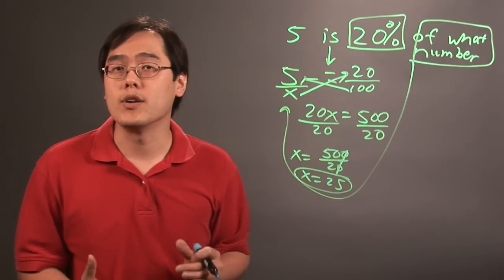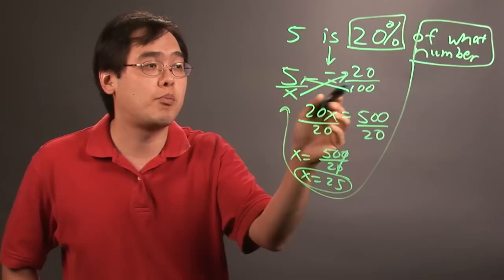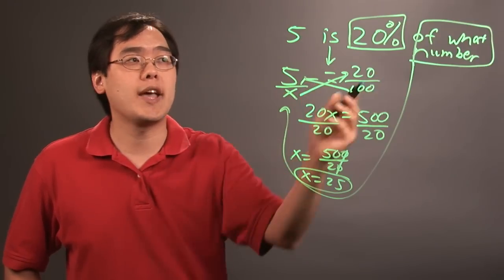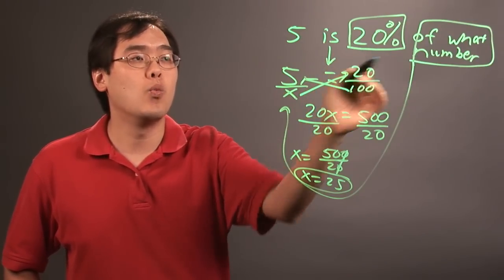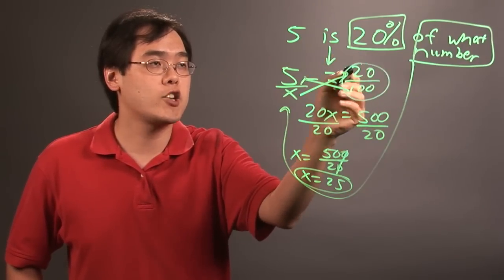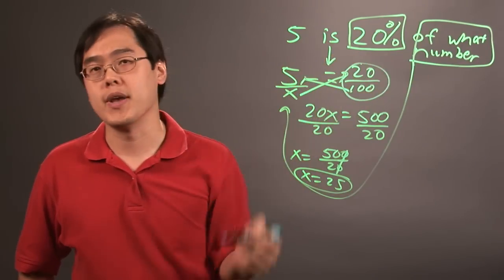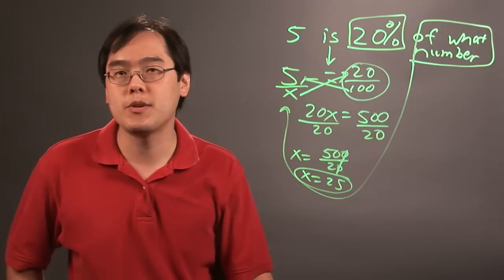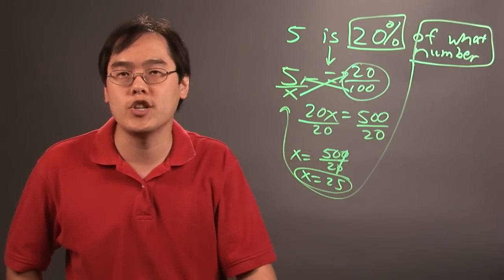But the bottom line here is, in order to solve and set up proportional equations, you have to look at the words and figure out what numbers go where. The percent is their own fraction, and the other parts make up the other fraction. I'm Jimmy Chang, and that's an example as to how to set up a proportional equation.